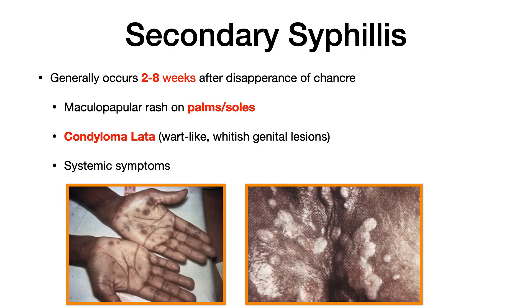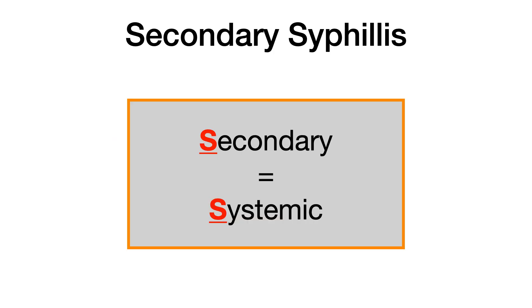Secondary syphilis occurs two to eight weeks after the chancre disappears. You get the chancre about 10 to 90 days after exposure; that chancre eventually disappears, and then two to eight weeks later you progress into secondary syphilis. In secondary syphilis you can get systemic symptoms, a maculopapular rash that tends to occur on the palms and soles, and the formation of condyloma lata — a wart-like white genital lesion. Remember: secondary equals systemic.